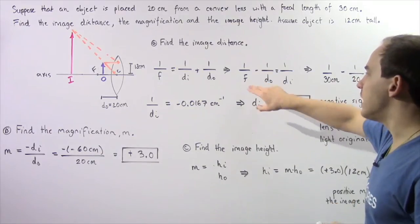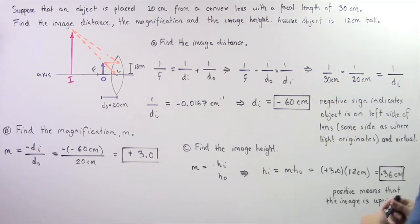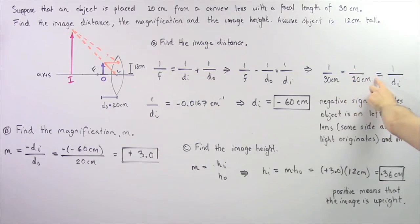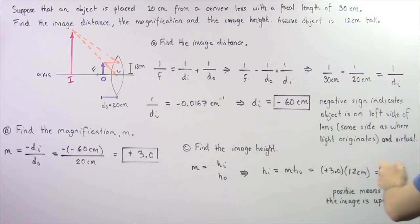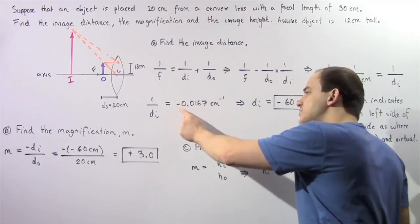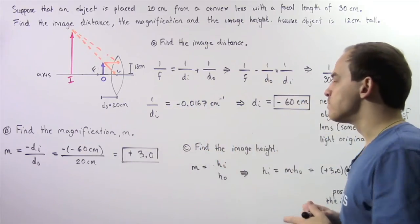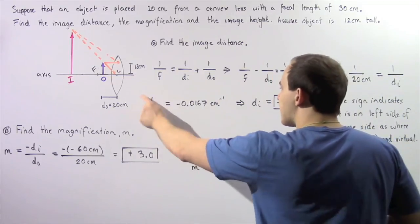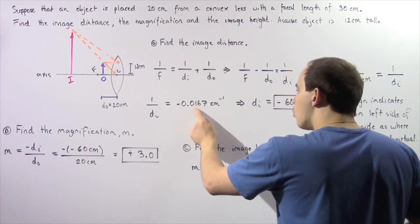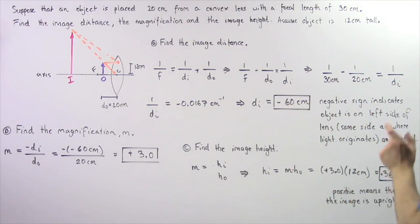F is given as 30 cm and Do is given as 20 cm. So one divided by 30 cm minus one divided by 20 cm gives us one divided by the image distance. One divided by the image distance equals approximately negative 0.0167 cm to the negative one. Multiplying both sides by Di and dividing by negative 0.0167, we get exactly negative 60 cm.